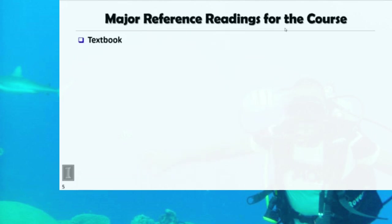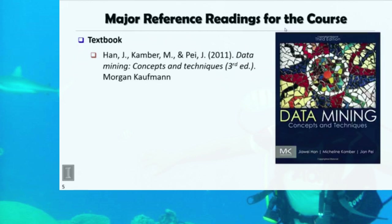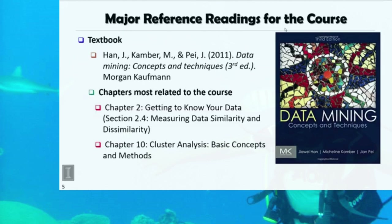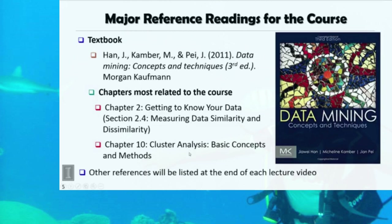In this course, the major reference for readings is my own textbook published in 2011, which is Data Mining: Concepts and Techniques, the third edition published by Morgan Kaufmann. In this book, we will only use two chapters. The first is chapter two — mainly section 2.4 for measuring data similarity and dissimilarity. And then chapter four is the major source related to this lecture, called Cluster Analysis: Basic Concepts and Methods. Other references will be listed at the end of each lecture video.